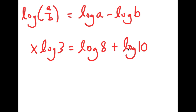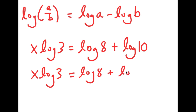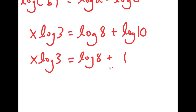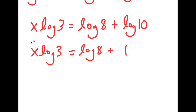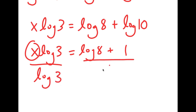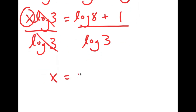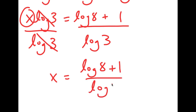Now, log 10 is simply equal to 1. So I get x times log 3 is equal to log 8 plus 1. Now, to isolate x, the only thing left to do is divide both sides by log 3. So log 3 cancels out and I get x equals log 8 plus 1 over log 3.